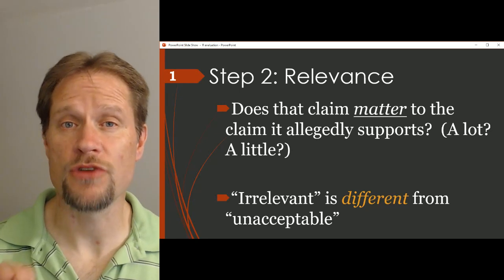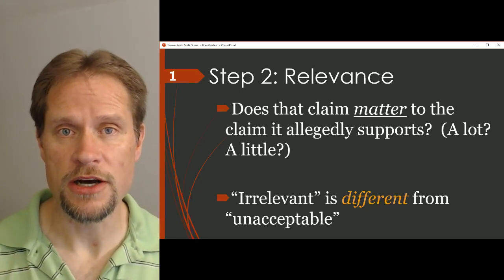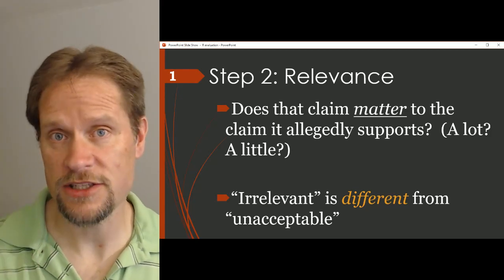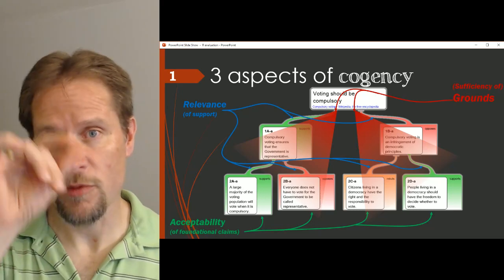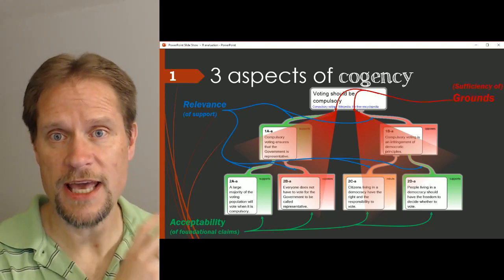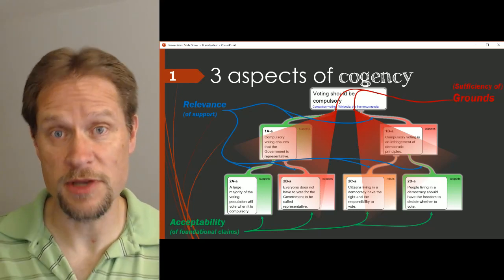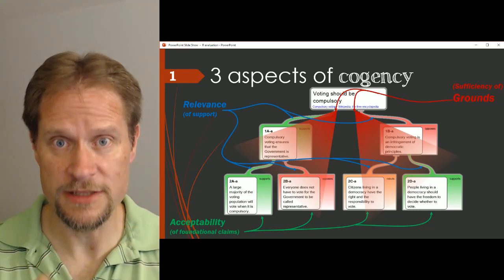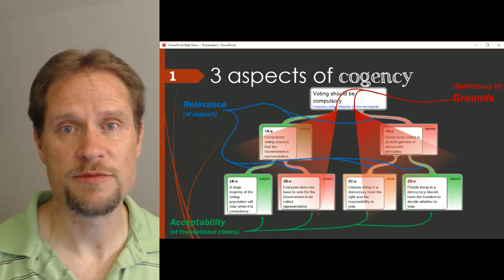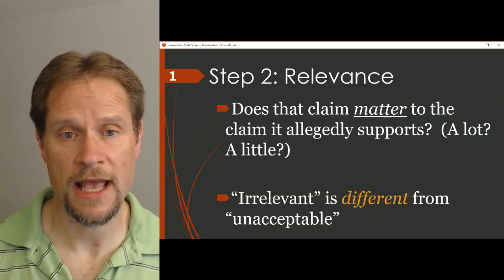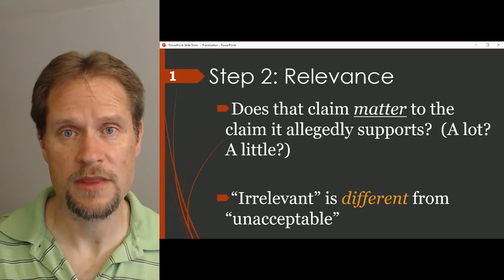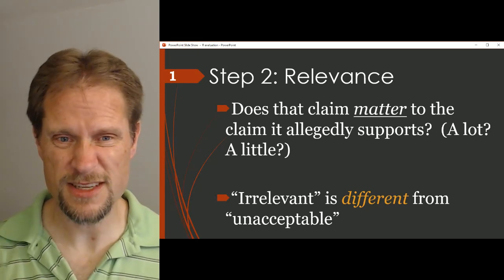The key question we're trying to answer for each one of those connections is: does the claim in the box underneath matter to the claim in the box above it that it allegedly supports? When we make a map, we're placing boxes according to our initial feelings or the arguer's communicated intent — they treat particular claims as being support for other claims. We place boxes, link them together. That's the analysis part. In the evaluation part, we're checking those connections to make sure they're legit: does that claim really matter, or does it not? Does it matter a lot or just a little?